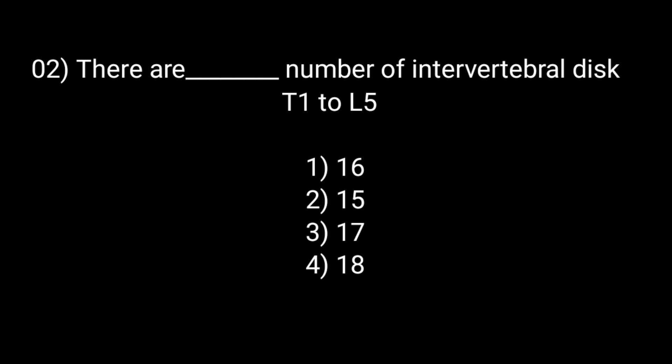There are how many intervertebral discs between T12 and L5? Option 1: 16, Option 2: 15, Option 3: 17, Option 4: 18. The answer is Option 1: 16. We remember that there are no intervertebral discs in Atlas and Axis.